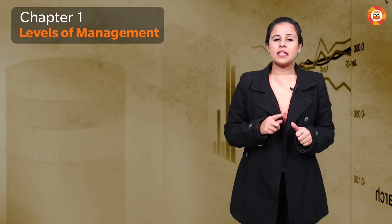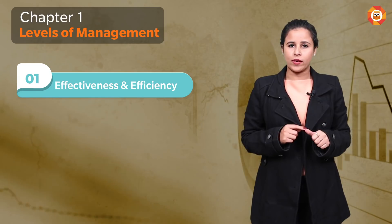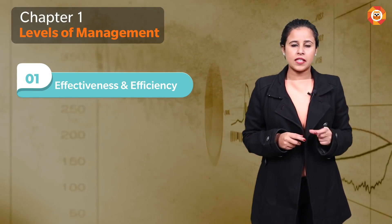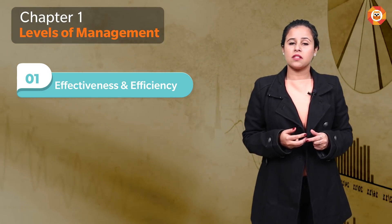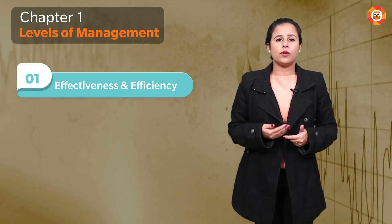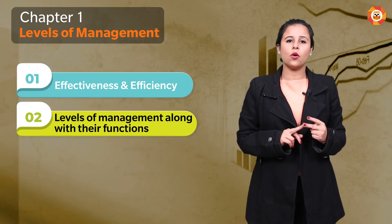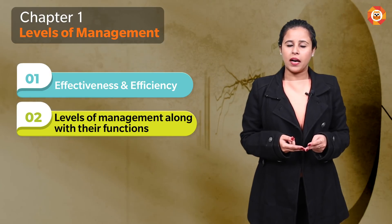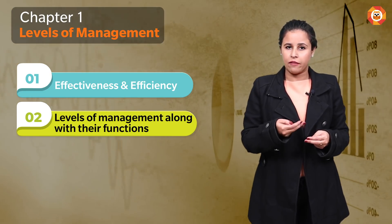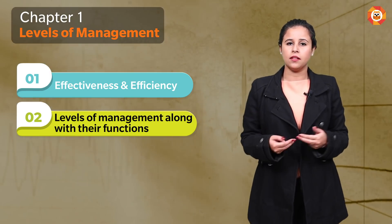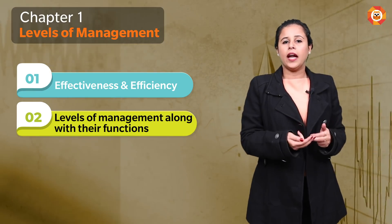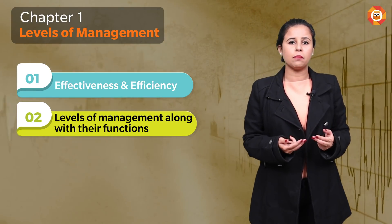Now that was all the analysis of CBSE papers. Let's move on to the important and most expected topics of this year. Beginning with Chapter 1, the most important topic is Effectiveness and Efficiency. Last year there was a question on this, and students are very confused about the difference. In last year's Delhi paper there was a 3-mark question where you had to identify whether something is effective or efficient. Second is levels of management along with their functions — this can be a case study of 3 to 4 marks, where you identify which person is working at which level and what functions they perform.